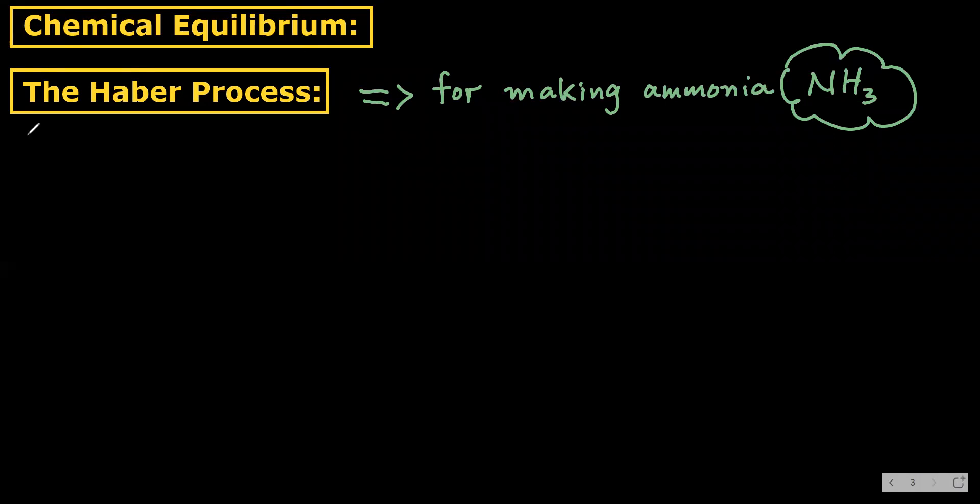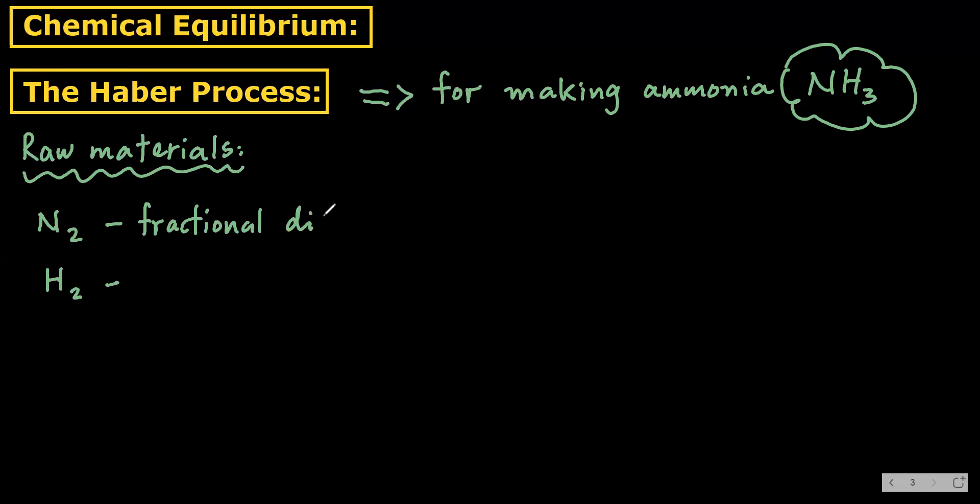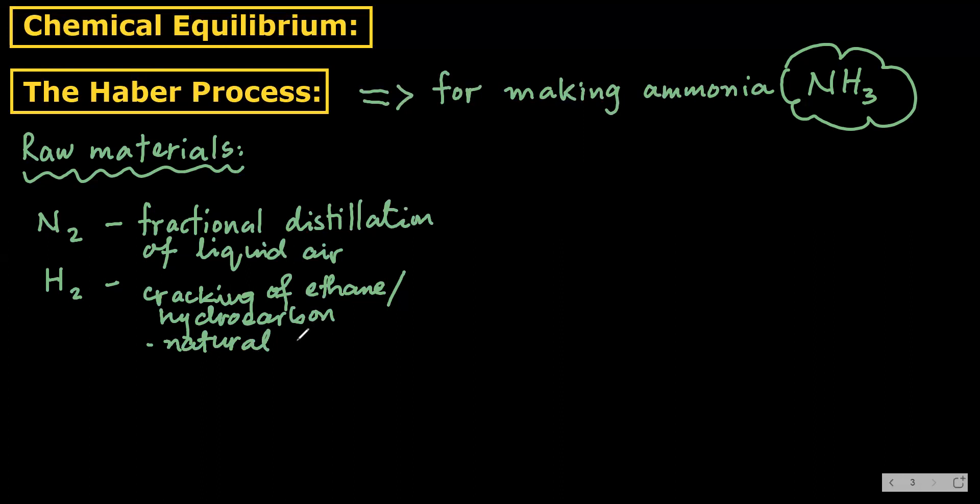First, we'll talk about the raw materials needed. Looking at ammonia's formula, it has nitrogen and hydrogen. Nitrogen is obtained by fractional distillation of liquid air, while hydrogen is obtained by cracking of ethane, hydrocarbons, or natural gas. In the exam, they would ask us where we obtain these from.